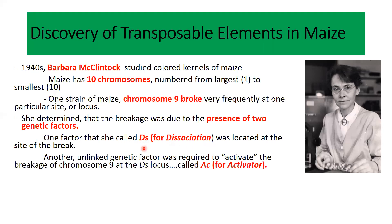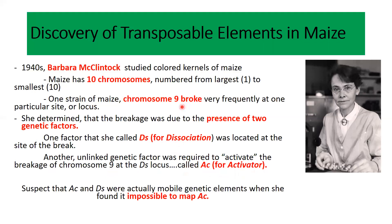She also identified another element called the activator (Ac) element. Whenever this activated element was present in a plant strain, the Ds locus was capable of moving from its position and generating a breakage in chromosome number 9. So there are two elements associated with breakage: the Ds element, which is the site of chromosomal breakage, and the activator element, which activates the breakage.